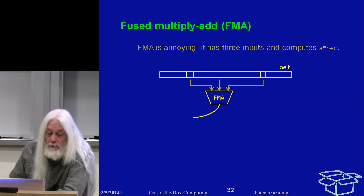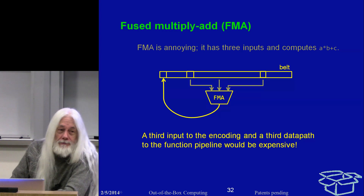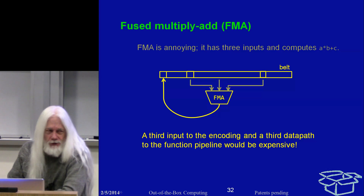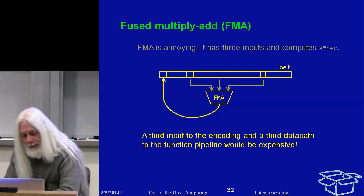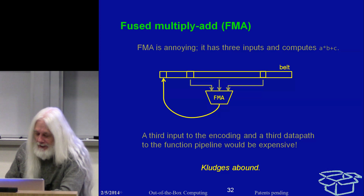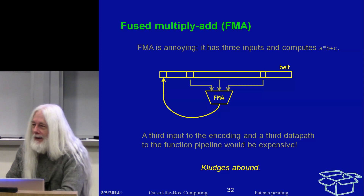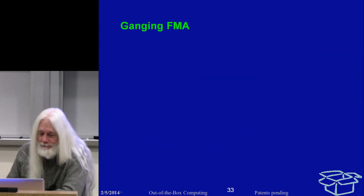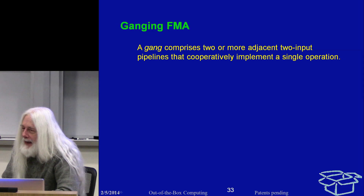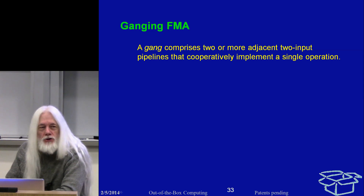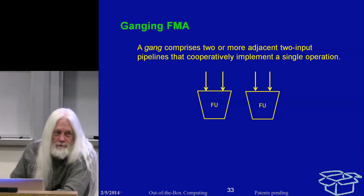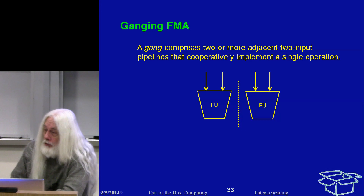Adding a third input into the encoding and into the data paths to the functional pipelines would be really expensive, and fundamentally you don't want to do it. Every machine that supports FMA has to deal with this, and the contortions it uses are extreme. The Mill doesn't do it quite that way. Instead, we define what we call a gang — two or more adjacent two-input data paths that cooperatively implement a single operation.